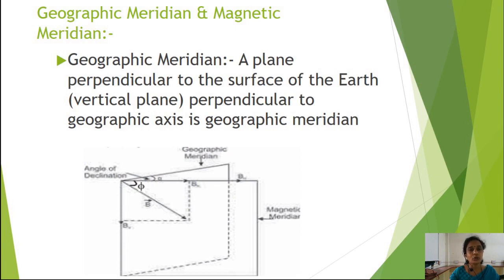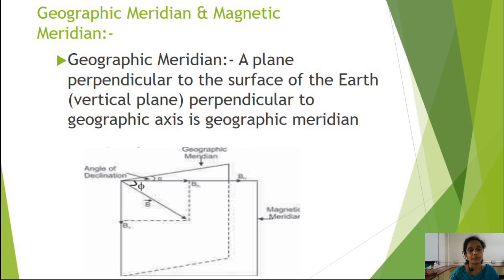The next parameter is the geographic meridian. The geographic meridian is defined as a plane perpendicular to the surface of the earth — a vertical plane that is also perpendicular to the geographic axis. In this figure there are two planes perpendicular to each other, and this one is called the geographic meridian.